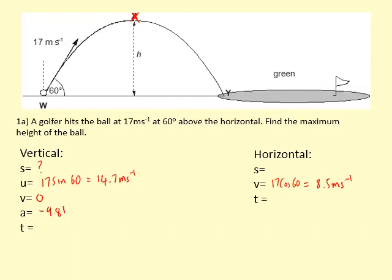So in the first case, what we should do is try to find the maximum height S. We can use v squared equals u squared plus 2AS. So 0 squared equals 14.7 squared plus 2 times minus 9.81 times S. If we rearrange this, we will get S equals minus 14.7 squared over 2 times minus 9.81, which gives us 11 meters. So it went 11 meters into the air.